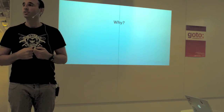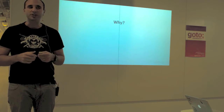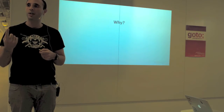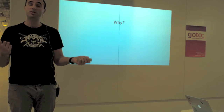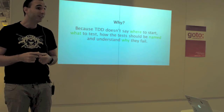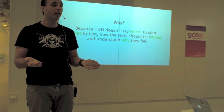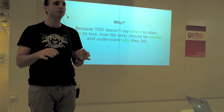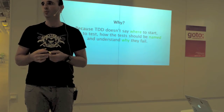Why wasn't TDD good enough? The first rule of TDD is you should never write a single line of production code if you don't have a failing test. It doesn't tell you where to start with your test, how to name them so that they are readable, or how to understand when they fail. It just tells you to write your test first. So BDD is about doing TDD with a focus on what the system is supposed to do and testing that with your tests.